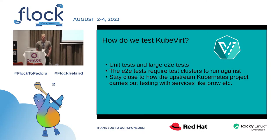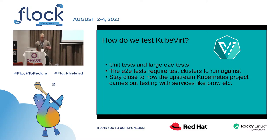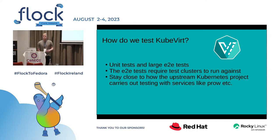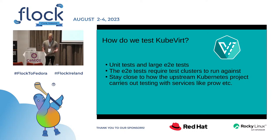The end-to-end tests actually require running against valid virtual test clusters that we spin up. One of the other aims in the project is that we try to stay as close as possible to the methodology used in the upstream Kubernetes projects, so their testing methodologies upstream. This means we end up using their ecosystem of tools, like Prow, which is basically like a Jenkins for orchestrating CI jobs against Kubernetes clusters.